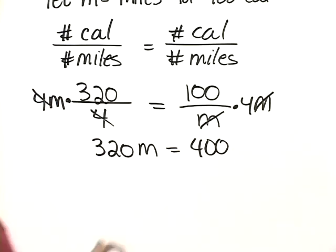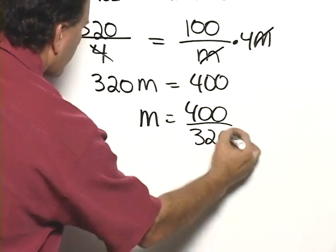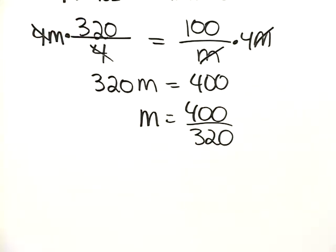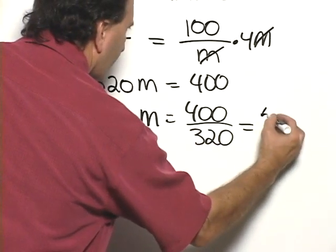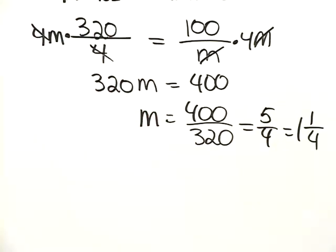Now we divide both sides by 320, so we have m is equal to 400 divided by 320, and when we simplify that, it is equal to 5 fourths,